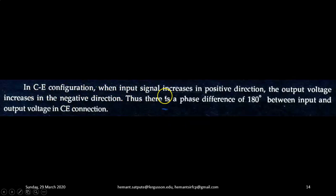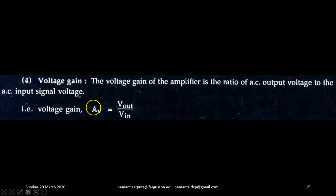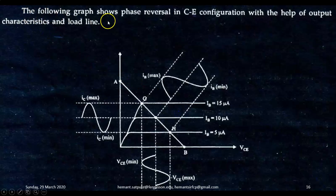Now, in CE configuration, when input signal increases in the positive direction, the output voltage increases in the negative direction. Thus, there is a phase difference of 180 degrees between input and output voltages in CE connection. Another important term is voltage gain. Voltage gain of the amplifier is the ratio of AC output voltage to the AC input signal voltage. Voltage gain AV equals the ratio of Vout to Vin.